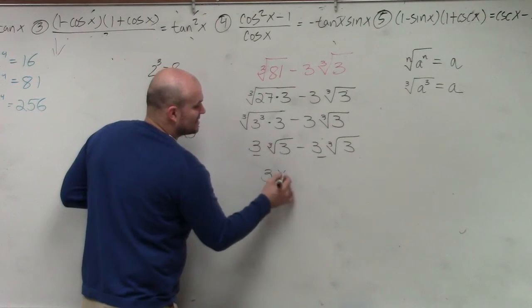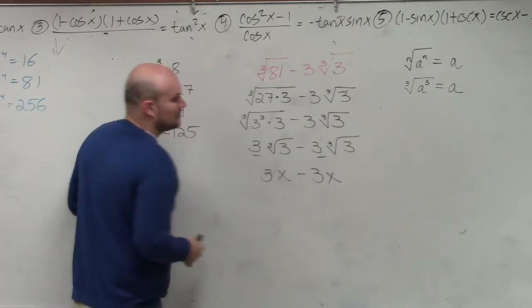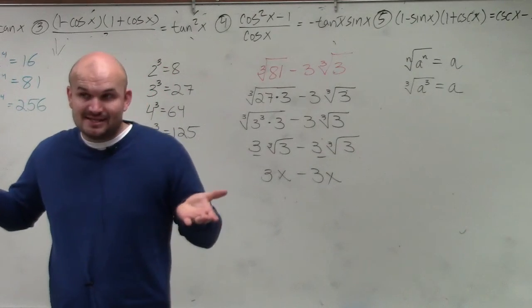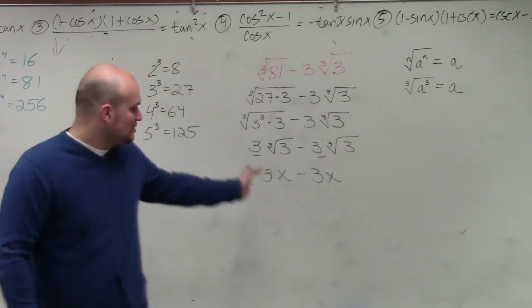So basically, you can just treat this as like 3x minus 3x. So remember, when you have 3x minus 3x, you don't change the x's, you just subtract the coefficients. So what's 3 minus 3?